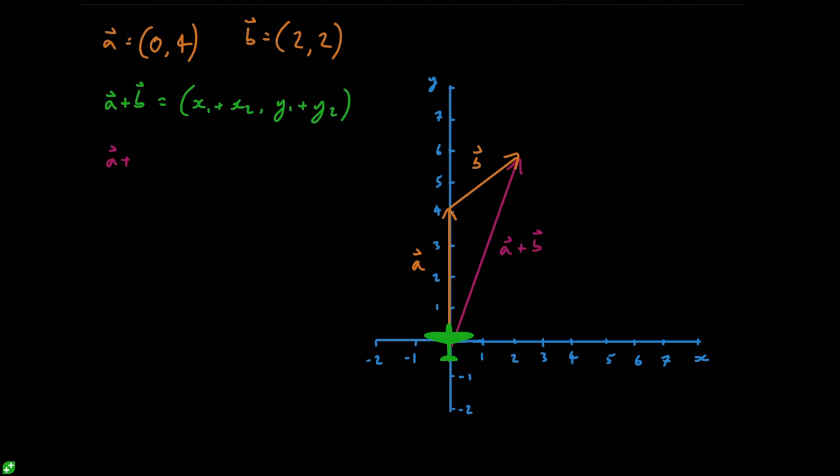So in terms of our vector here that would give us the vector a plus vector b is going to equal 0 plus 2 is going to give us 2, and then 4 plus 2 is going to give us 6. So that's really all there is to vector addition.